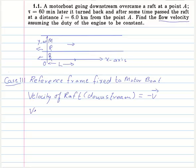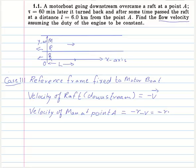So what will be the velocity of the man at point A? That is, what will the person on the motorboat see this man moving away from him? That will be minus r minus v, which will actually equal minus r plus v.